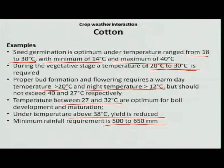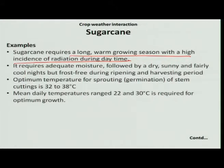Let us see the crop weather interaction for sugarcane. Sugarcane requires a long warm growing season with a high incidence of solar radiation during the daytime. Because sugarcane produces more than 100 tons of biomass, triggered by the photosynthesis process, it requires a long warm growing season with high solar radiation. It also requires optimum moisture throughout the growth stages, and it can be cultivated in the early season as well as the late season.